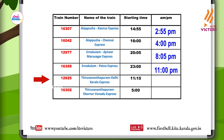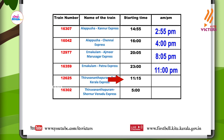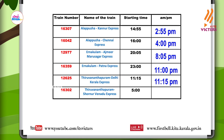Look at the fifth one. Train number 12625, Thiruvananthapuram Delhi Kerala Express. What is the starting time? It is eleven fifteen. How do we write eleven fifteen in twelve-hour clock? Eleven fifteen means before twelve noon. So we can write it as eleven fifteen AM.